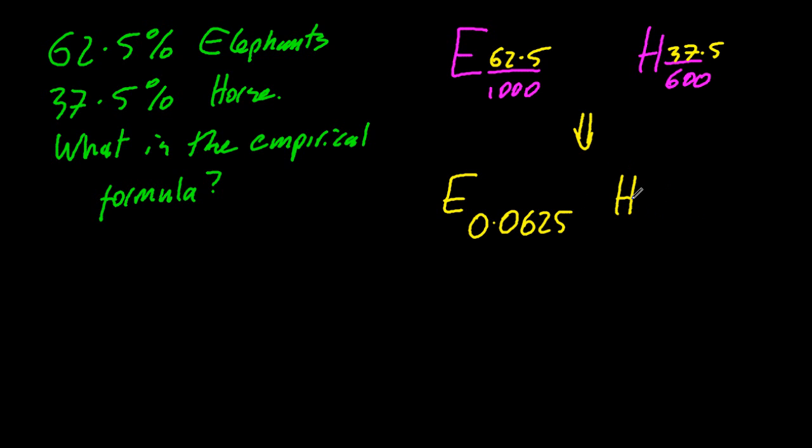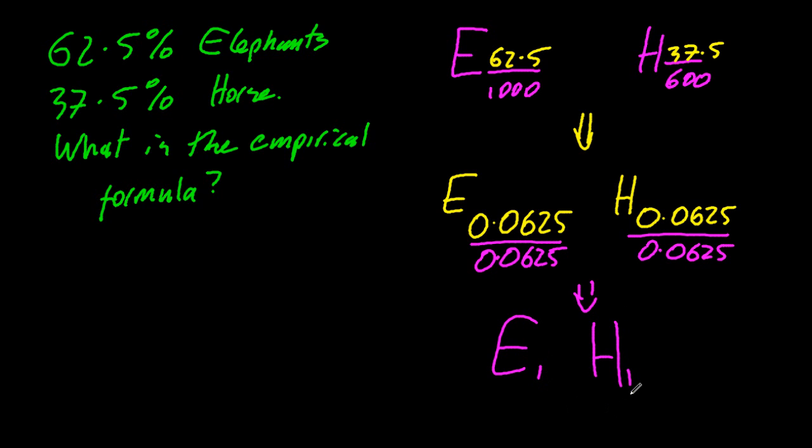Okay, do the simple division. Now we need integers here, and neither of these is going to give us an integer. So divide by the smallest number, or in this case it's the same number, but divide by the smallest number, and more often than not, integers will pop out. So there's one elephant for every one horse. You can leave the ones or take them away, it doesn't really matter if it's a one.